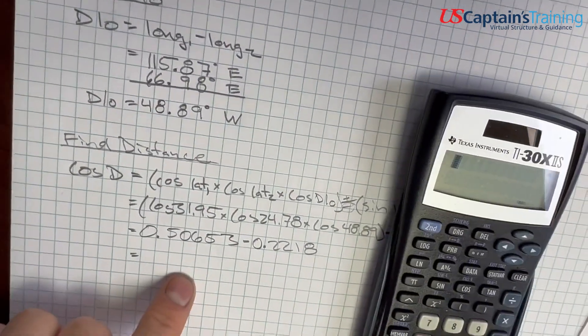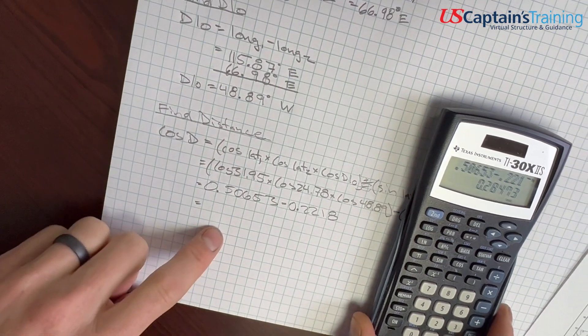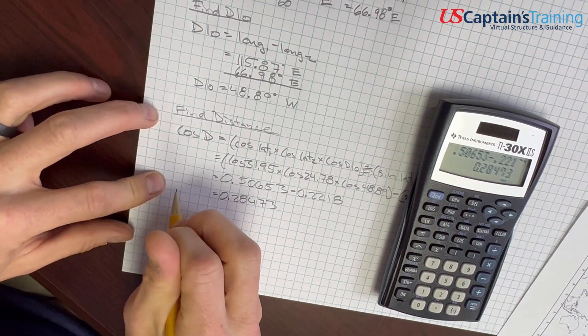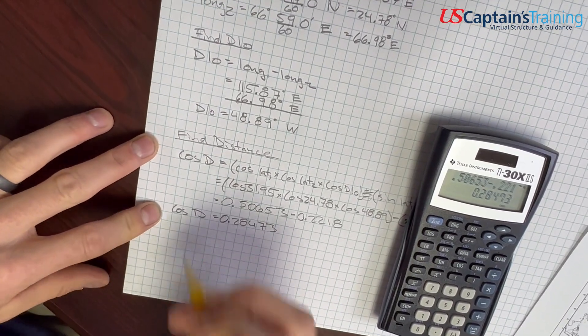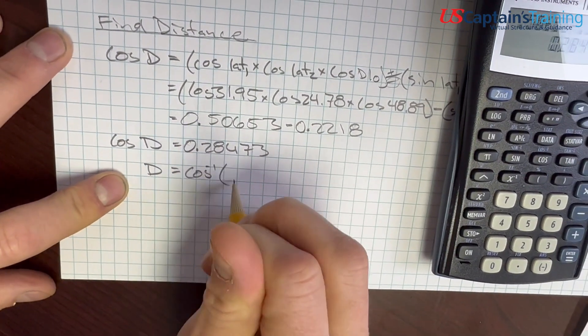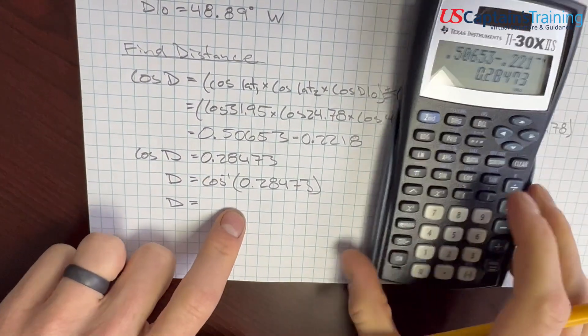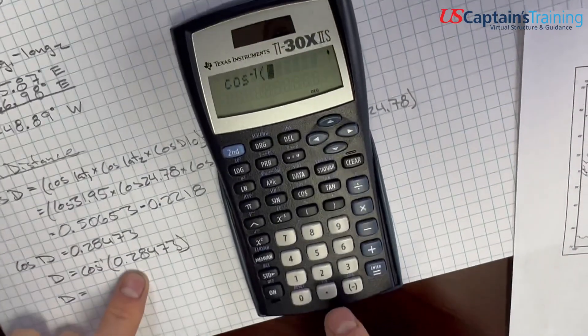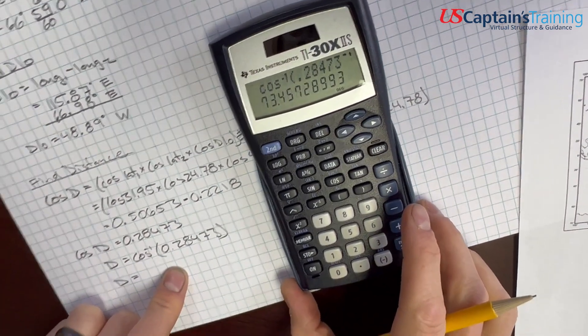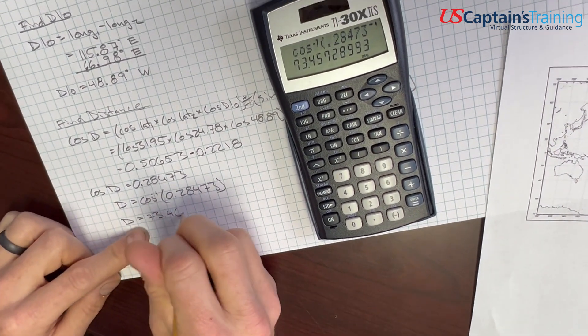I'll just keep it straight. 0.50653 minus 0.2218 equals 0.28473. And this is the cosine of distance. We just want distance, don't we? So, distance equals the inverse cosine of this number. And so, what does the distance equal? This is going to come out in degrees. Second, cosine, inverse cosine, 0.28473, enter, 73.46 degrees.